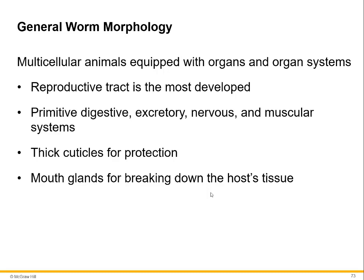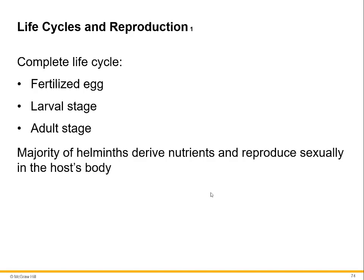The general worm morphology: they're multicellular animals with a very well-developed reproductive tract. Their reproductive strategy is to reproduce a lot, because the more they reproduce the more they are able to survive. They have a primitive digestive system, excretory system, nervous system, and muscular systems, along with thick cuticles for protection and mouth glands for breaking down host tissue. They really are very complex — they're invertebrate animals.